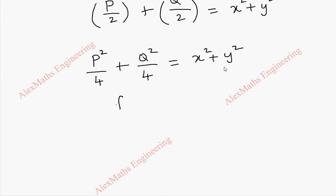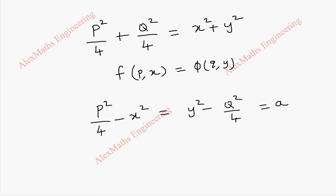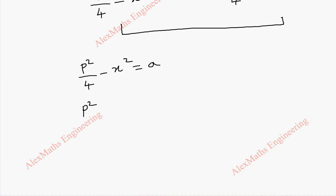This can be rearranged in the form of f of P and x on one side, equal to another function phi of Q and y on the other side. So we rewrite this as P squared by 4 minus x squared, equal to y squared minus Q squared by 4. We take this equal to a constant, a. Taking the first term: P squared by 4 minus x squared equals a. From this, P squared by 4 equals a plus x squared, so P squared equals 4 into a plus x squared.